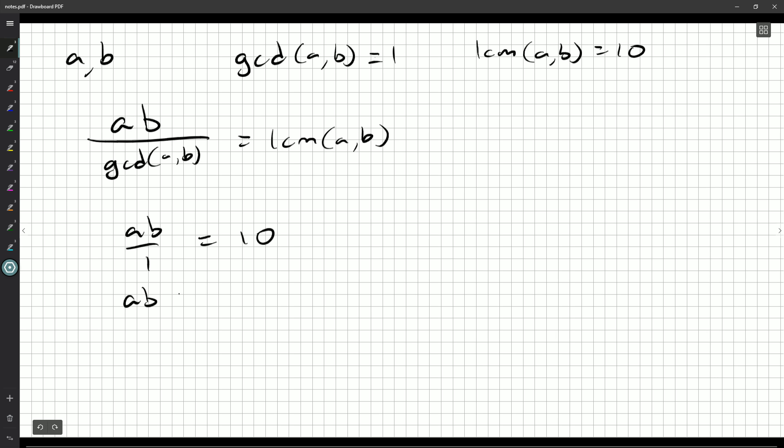So we need A times B to be exactly ten. Can we think of two numbers that multiply to ten? Well yeah, you could have one and ten, two and five, and that's it. There aren't really a lot of pairs of factors of ten.